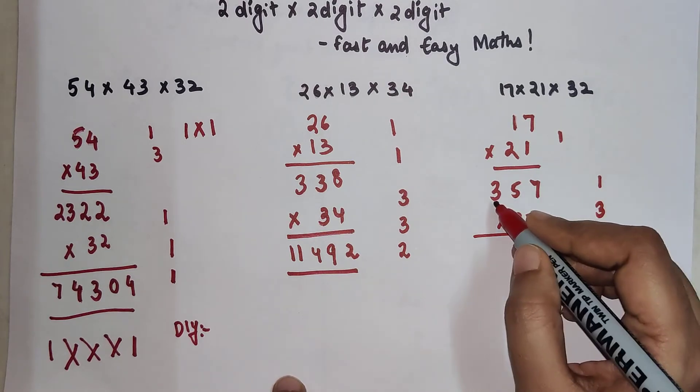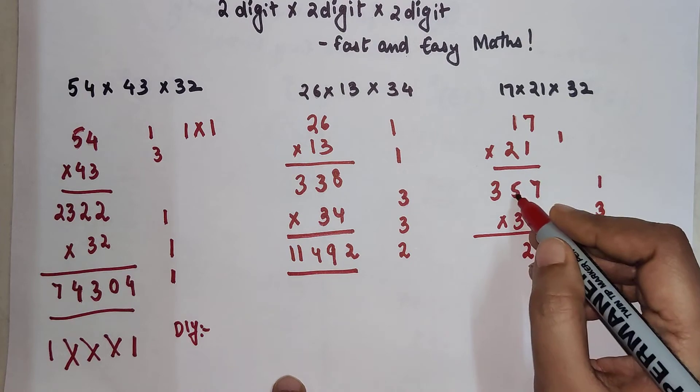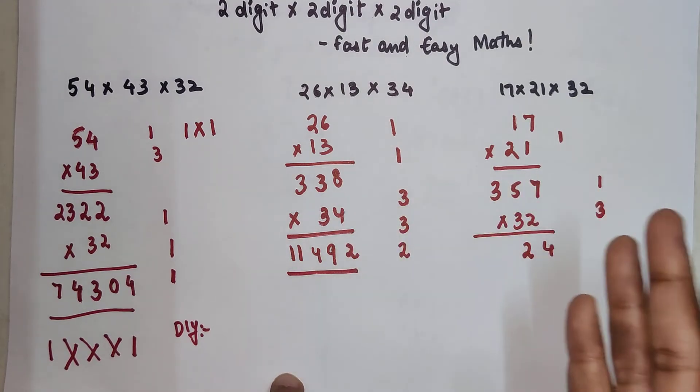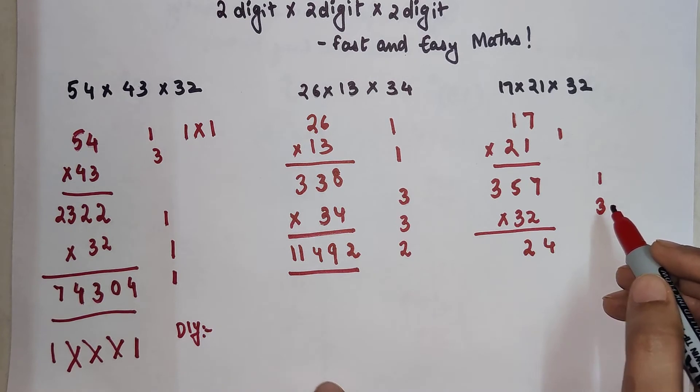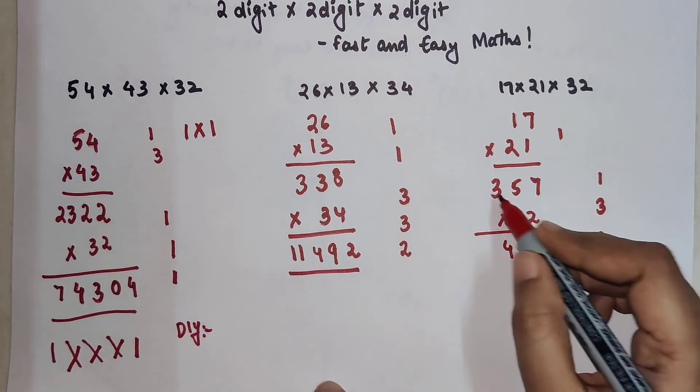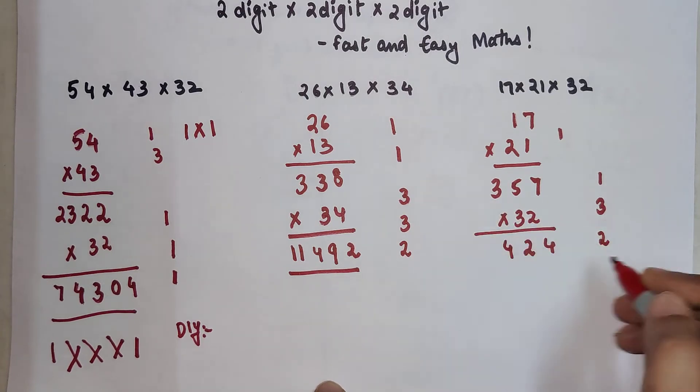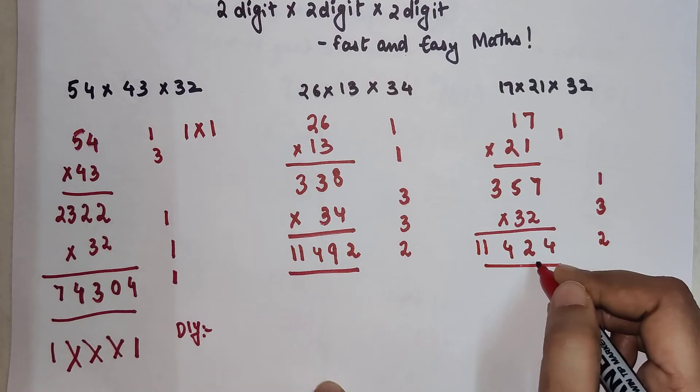Then we have 2 into 3 which is 6. 3 into 5 which is 15. So 6 plus 15 is going to get you 21. Plus 3 will get you 24. So 4 and 2 carry.